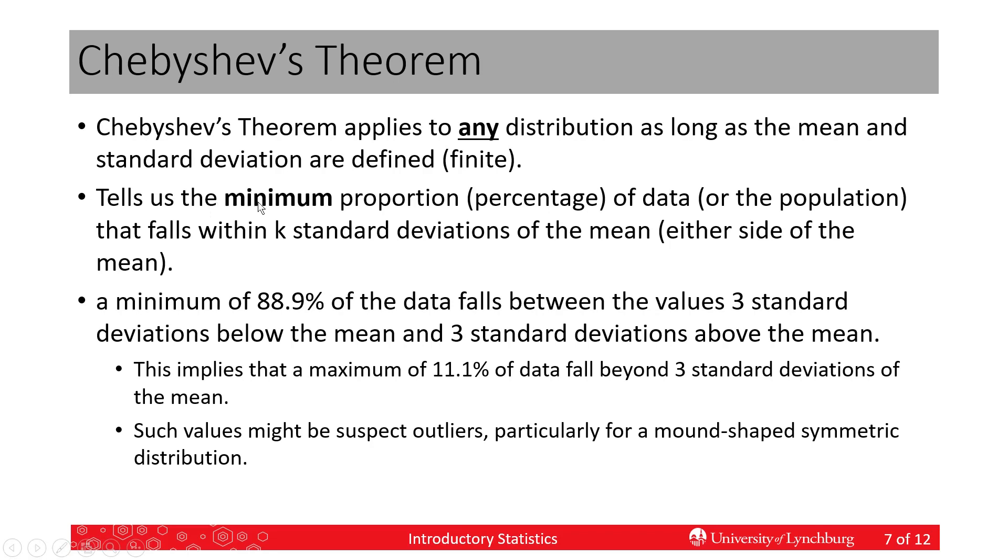So, the Chebyshev theorem, it tells us the minimum proportion or percentage of the data or the population that falls within k standard deviations of the mean. And that's either side of the mean, like we just went over. And here is an example. We have a minimum of 88.9% of the data that is within three standard deviations of the mean.